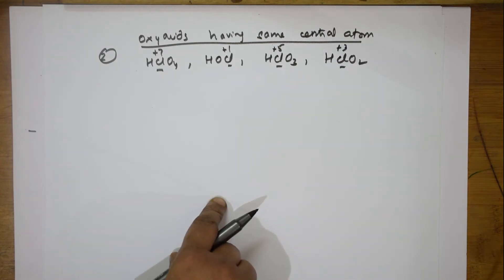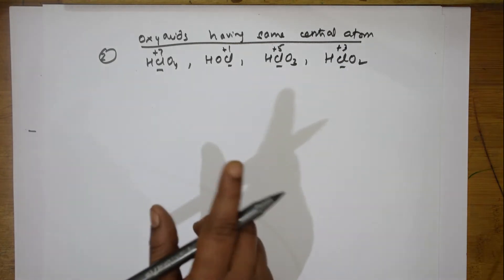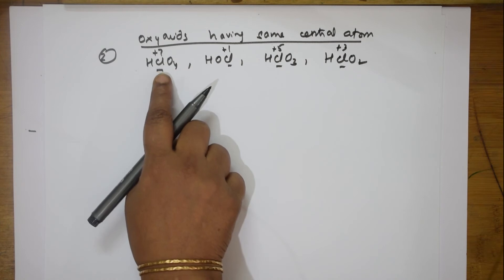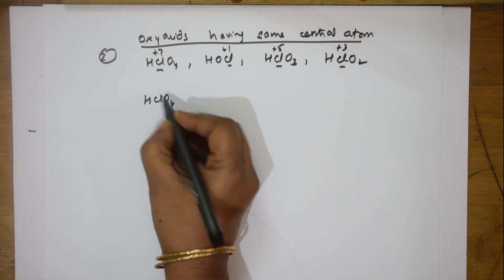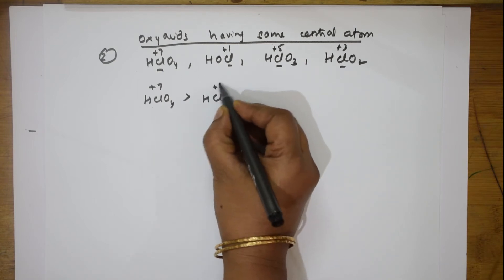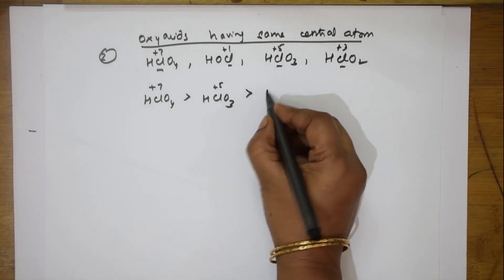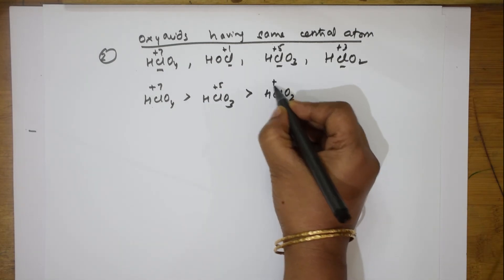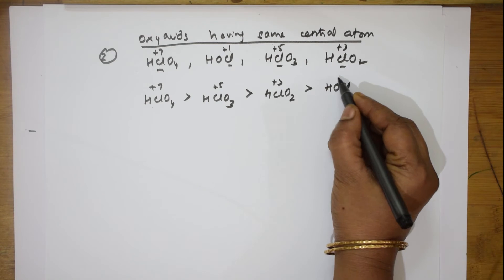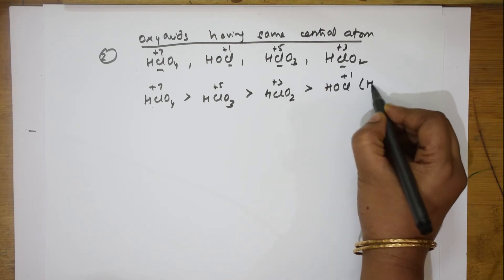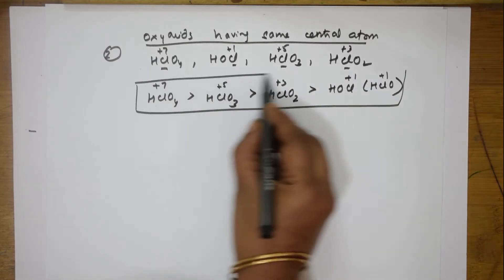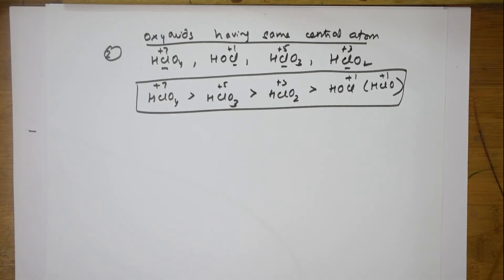Start arranging based on oxidation number. HClO4 (+7) has maximum acidity, greater than HClO3 (+5), which is greater than HClO2 (+3), which is greater than HOCl (+1). HOCl can also be written as HClO — it is still +1. So this is the order based on oxidation number: higher the oxidation number of the central atom, greater is its acidity.